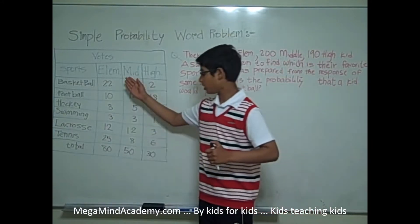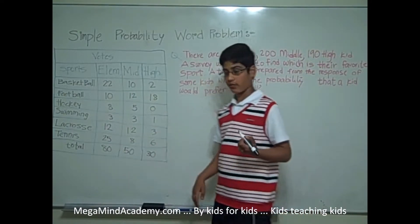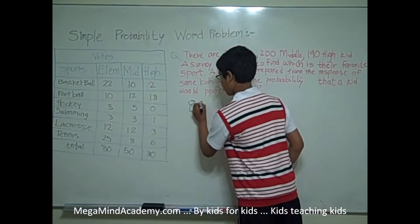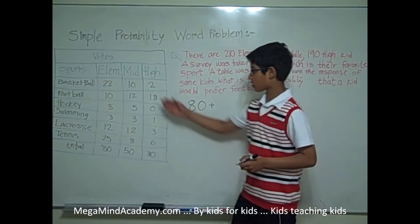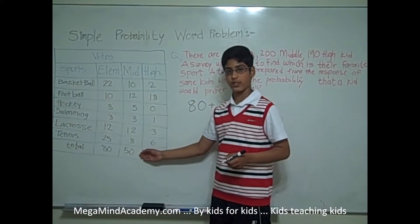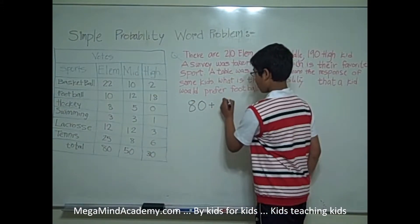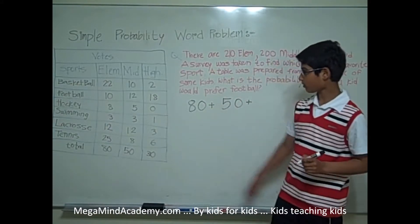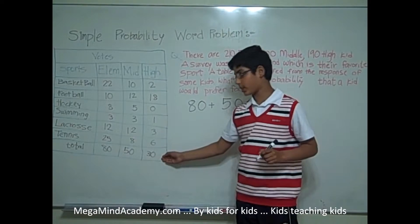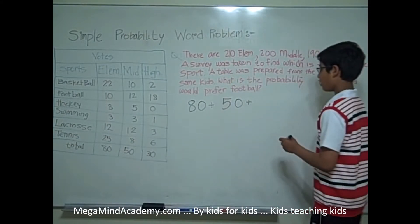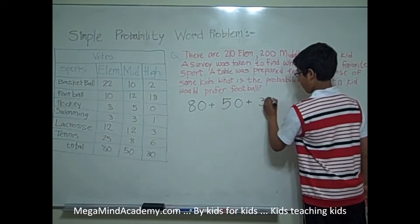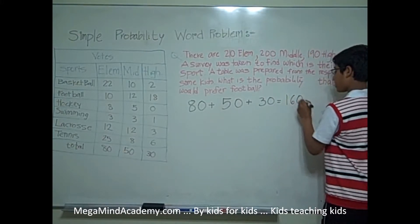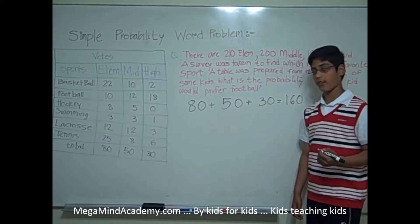In elementary school, 80 kids were interviewed for the survey. In middle school, 50 kids were interviewed for the survey. In high school, 30 kids were interviewed for the survey. So, 80 plus 50 plus 30 equals 160 kids who were interviewed for the survey.